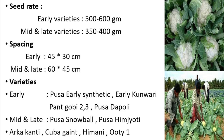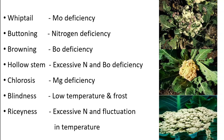Mid and late varieties are Pusa Snowball and Pusa Himjyoti. Other important varieties are Akka Kanti, Cuba Giant, Himani, and UTI One.